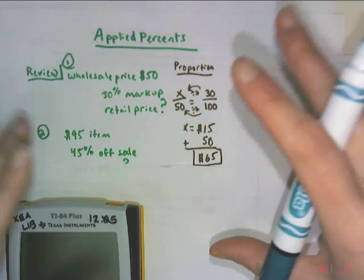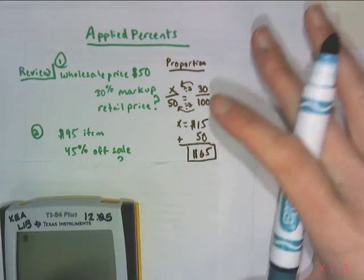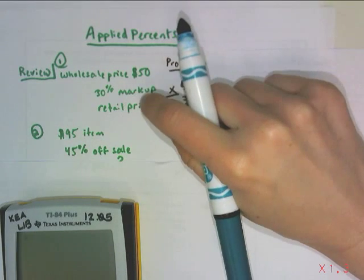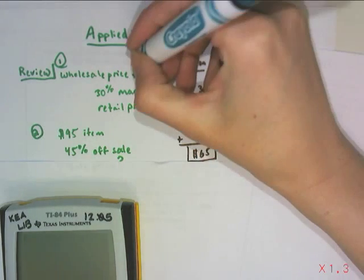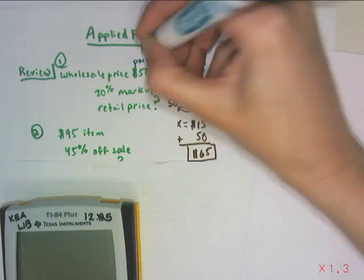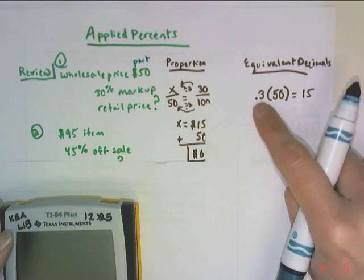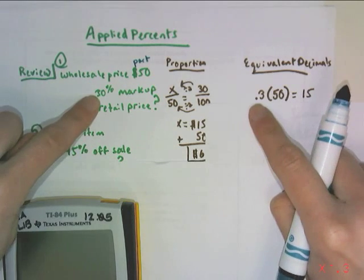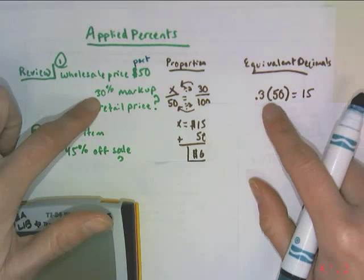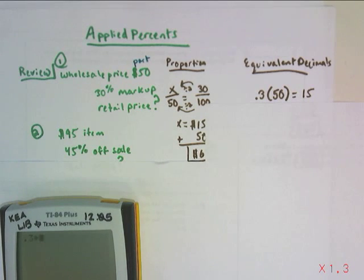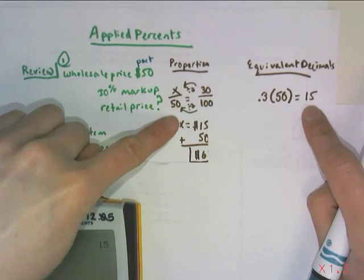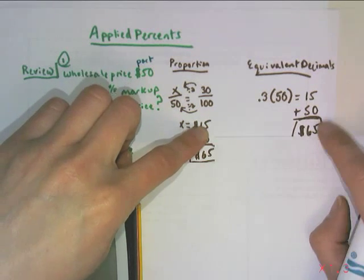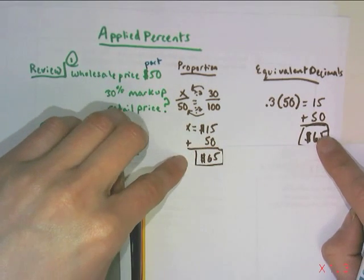Now, the thing that we had mentioned last time that we now want you to focus on is how to do this with the equivalent decimal. So again, we are finding 30% of 50, so we're looking for a part. And when you translate this to math, this is 30% of 50. So 30% as a decimal is 0.3, of means multiply, so if you multiply 0.3 times 50, you notice that we get the same $15 part. So then you just add the 15 to the starting value, and we get the same answer, 65.